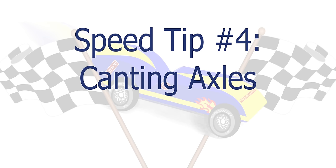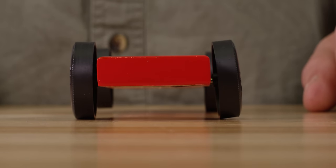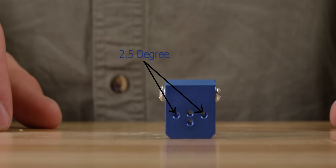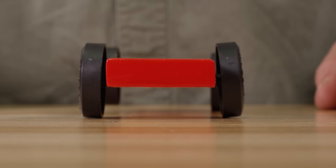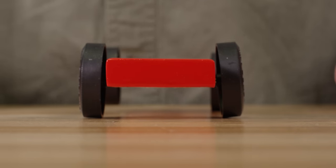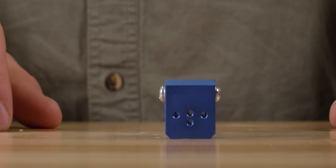Speed tip number four is canting your axles. So what does canting mean and why do you want to cant your axles? Canting your axles simply means that the axles are at a slight angle instead of perfectly straight. The Pro Driller has our exclusive 2.5 degree angled drill guide holes so you can easily cant your axles. When you cant your axles 2.5 degrees, your wheels will drift towards the axle head where there is less friction instead of drifting towards the car body where there is more friction. Less friction equals more speed. No other Pinewood Derby tool on the market has these exclusive 2.5 degree angled drill guides.